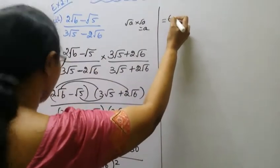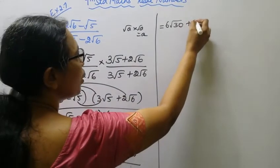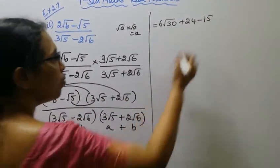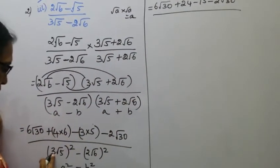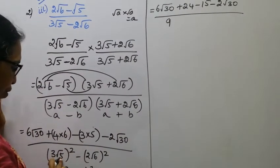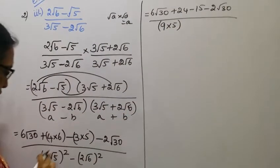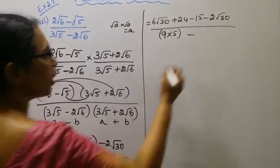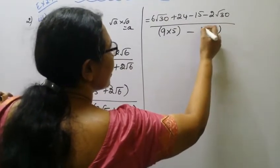Computing: numerator has 6 root 30 and 24. Then 5 times 3 gives 15, and minus 2 root 30. For the denominator: 3 squared is 9, root 5 squared is 5, so 9 times 5 equals 45. Then 2 squared is 4, root 6 squared is 6, so 4 times 6 equals 24. Therefore denominator is 45 minus 24 equals 21.